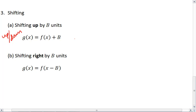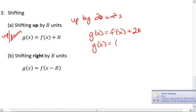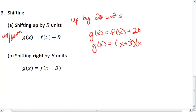So let's say we want to shift up by 20 units. Then we take our original function f of x and we add 20 to all the outputs. So we get x plus 3, x minus 1, x minus 4, and at the very end, plus 20.